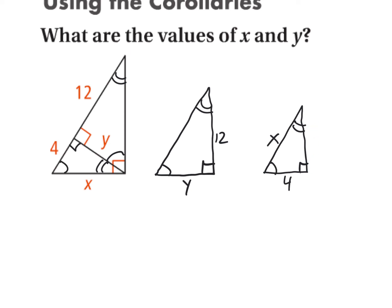I don't know the length of that third leg on the small triangle — but I can call it Y, because between the double mark and the right angle on the small triangle, that's Y. Looking at the big triangle, it's going to be helpful to know the entire hypotenuse. That length is going to be 12 plus 4, which is 16. So that's the length of that entire side of the big triangle.